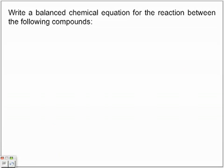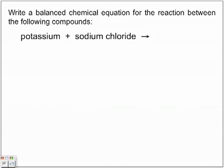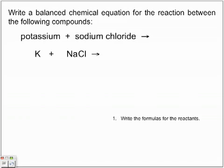Now let's look at it in terms of actual chemistry. Write a balanced chemical equation for the reaction between potassium and sodium chloride. Remember the five-step crossover rule for metal/non-metal — you need to be able to identify. We write the formula of our reactants: potassium and sodium chloride is NaCl.